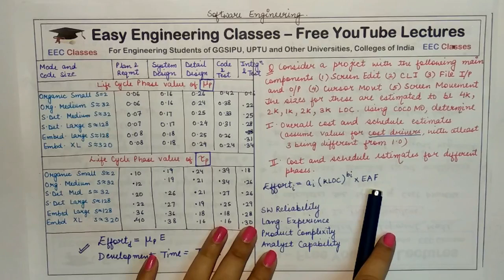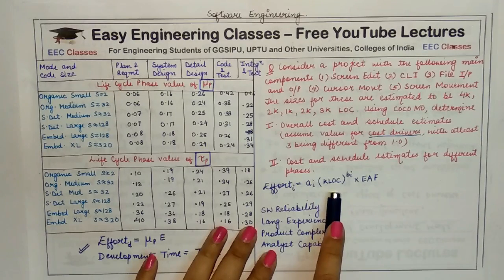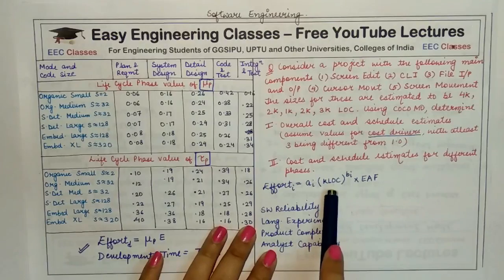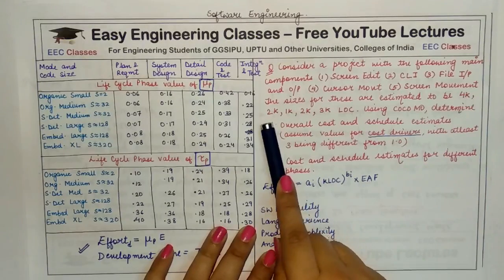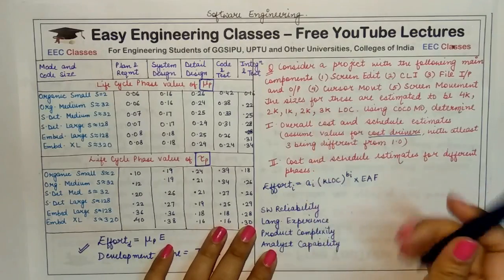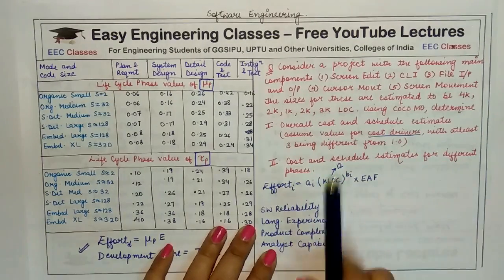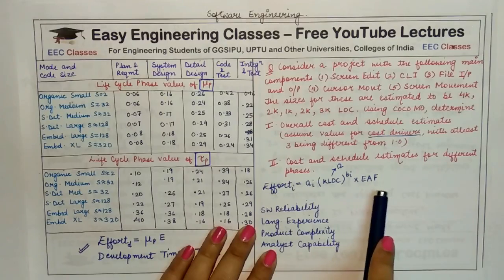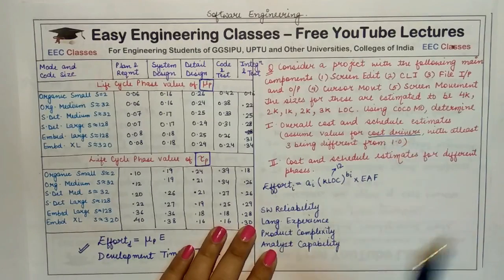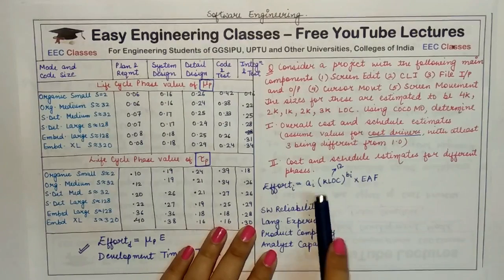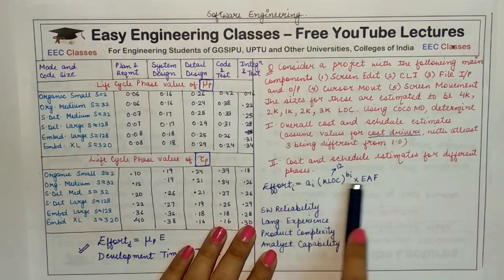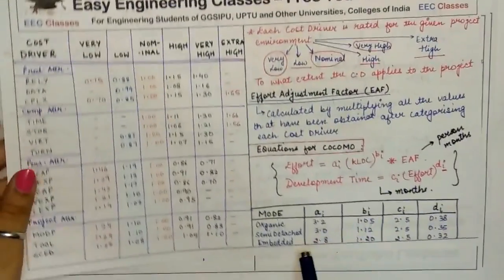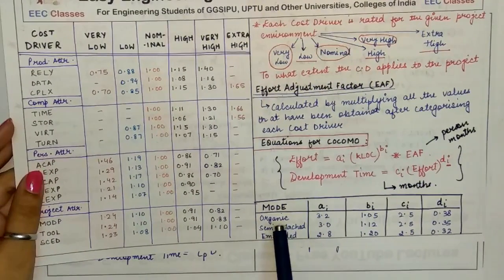The sum of all the sizes mentioned gives: 4 + 2 + 1 + 2 + 3 = 12 kilo lines of code. Since we have to use cost drivers for the first part, we use the intermediate model. With a size of 12 KLOC, we understand this falls in the organic mode.